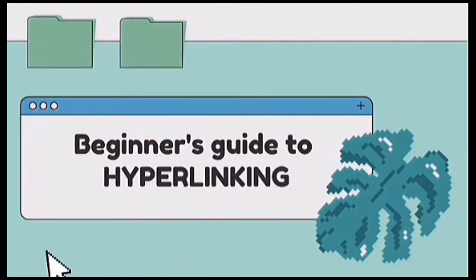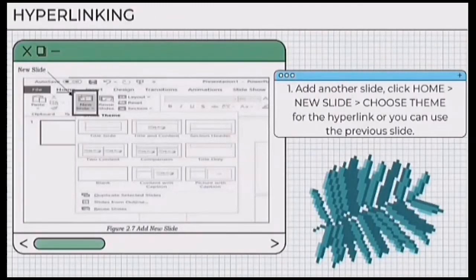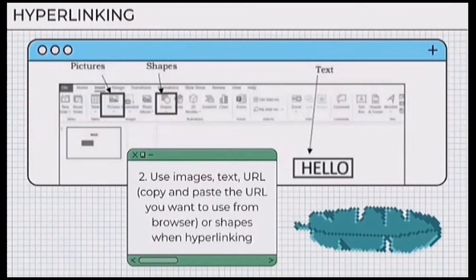Next is hyperlinking. For step one, add another slide. Click Home, then New Slide, then choose a theme for the hyperlink, or you can also use the previous slide. For step two, use images, text, or URL. Copy and paste the URL you want to use from the browser, or use shapes when hyperlinking.